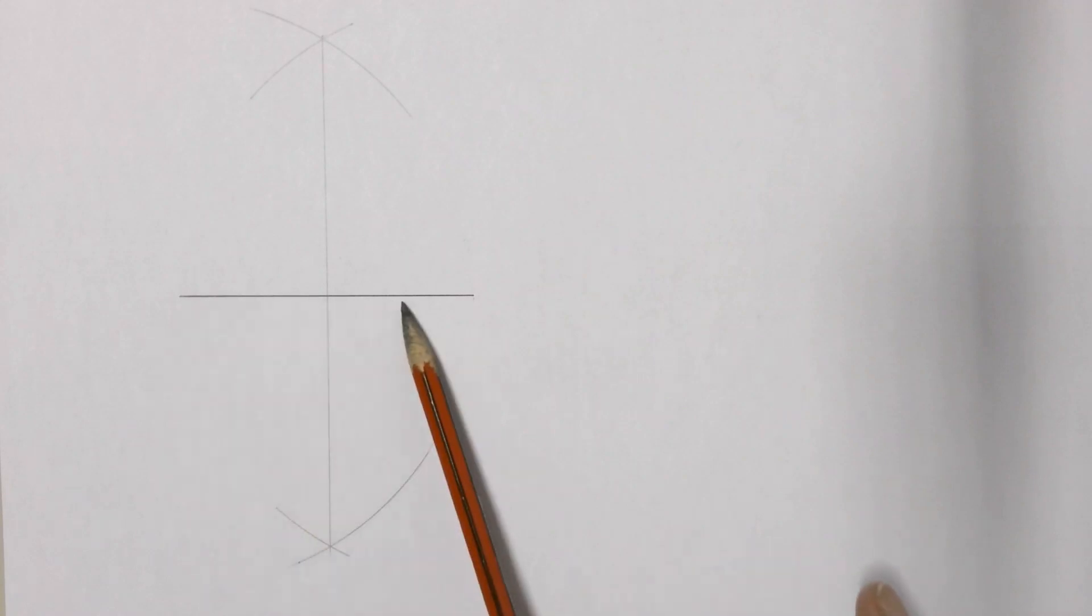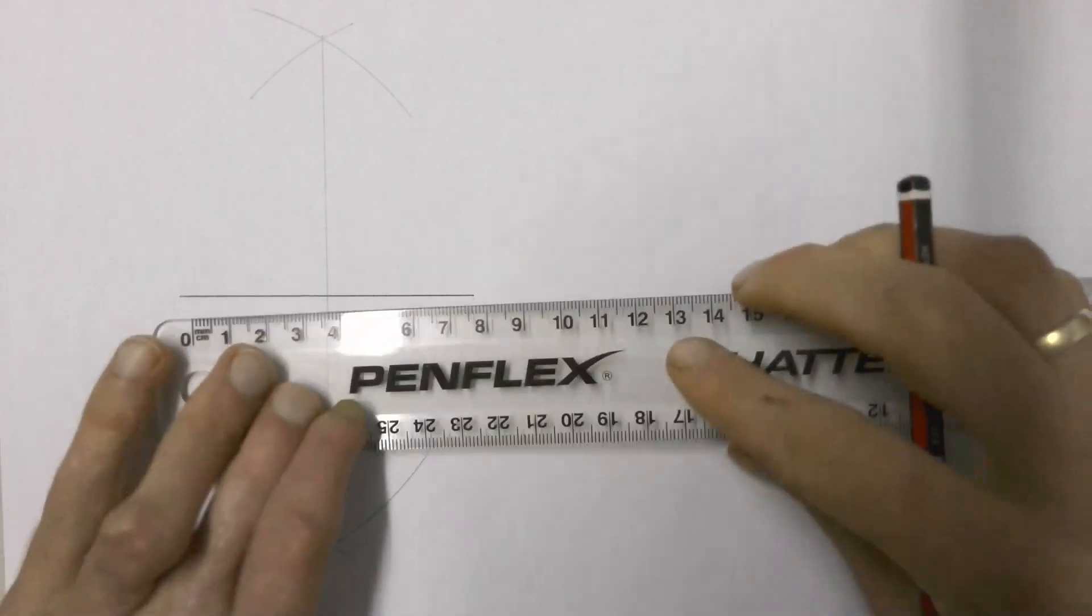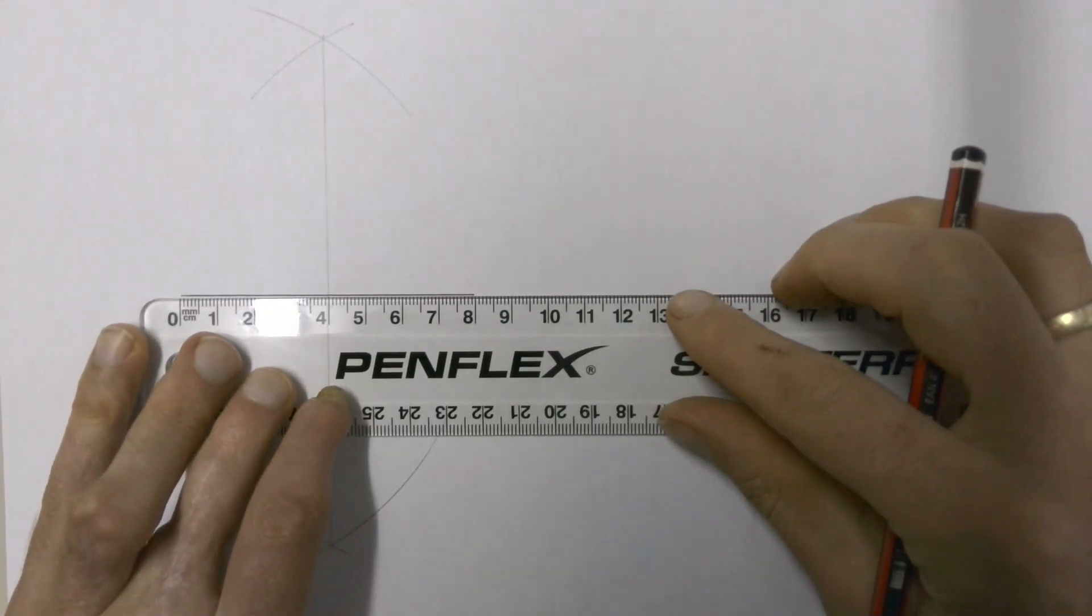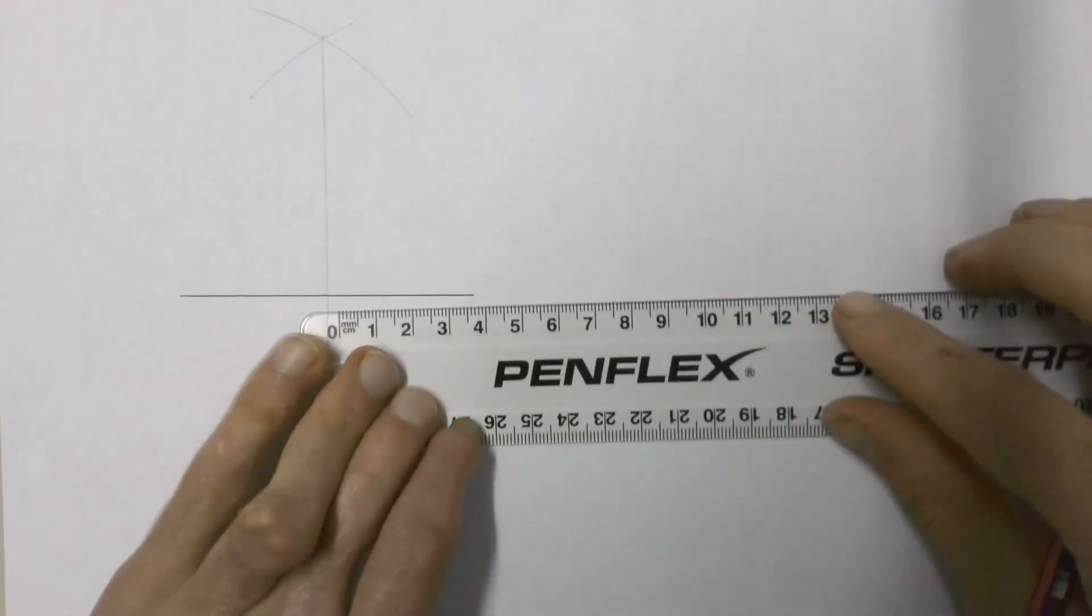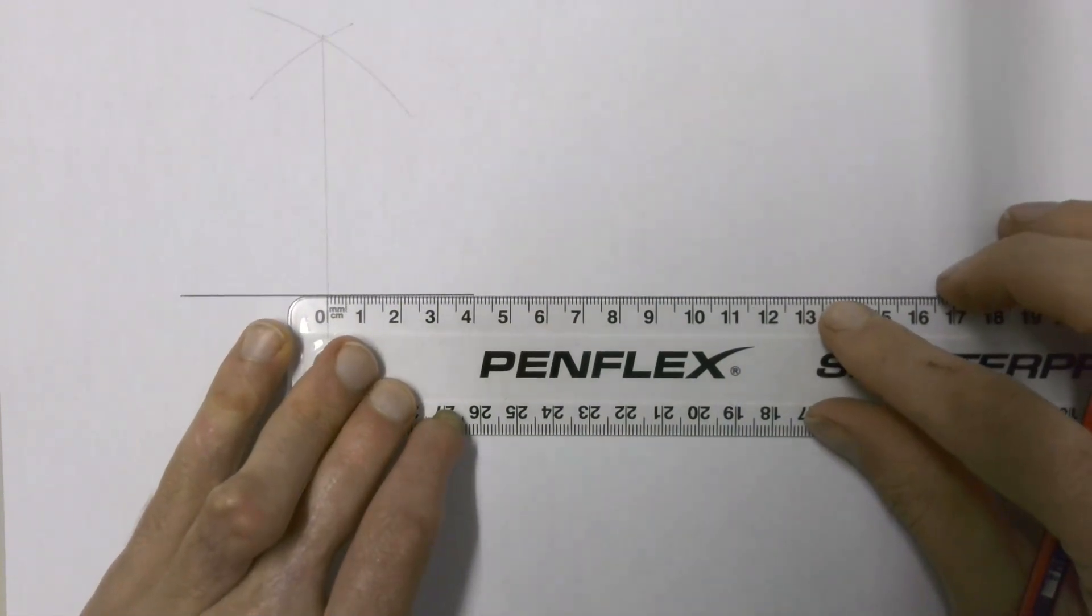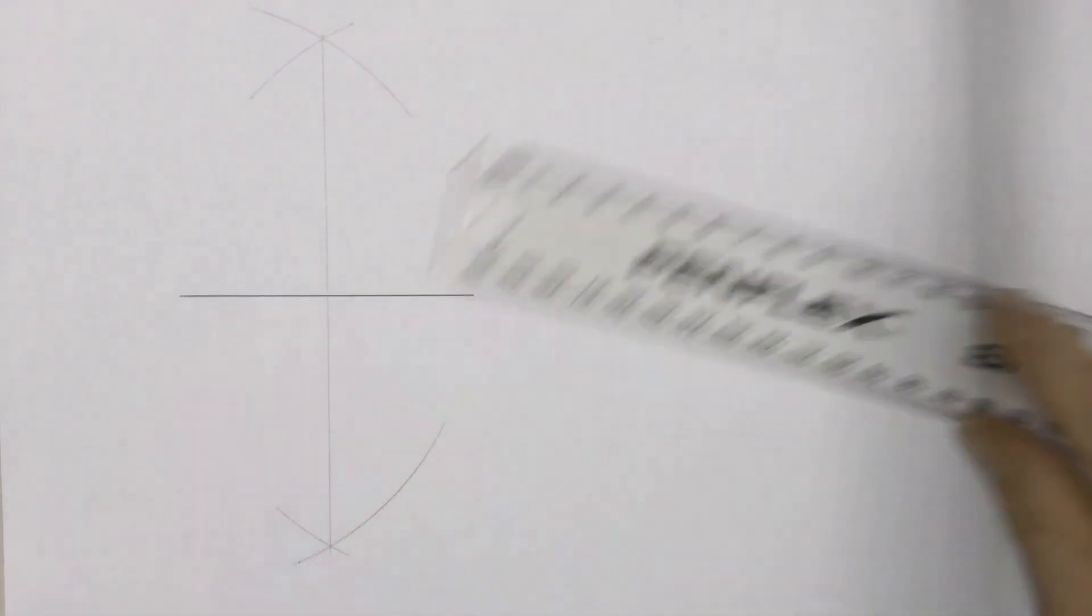joining those two points, the line that we've now drawn should perfectly bisect this line here. We should be able to see that the two sides, that side being 40 millimeters long and this side 40 millimeters long, that line is perfectly bisected, our line segment.